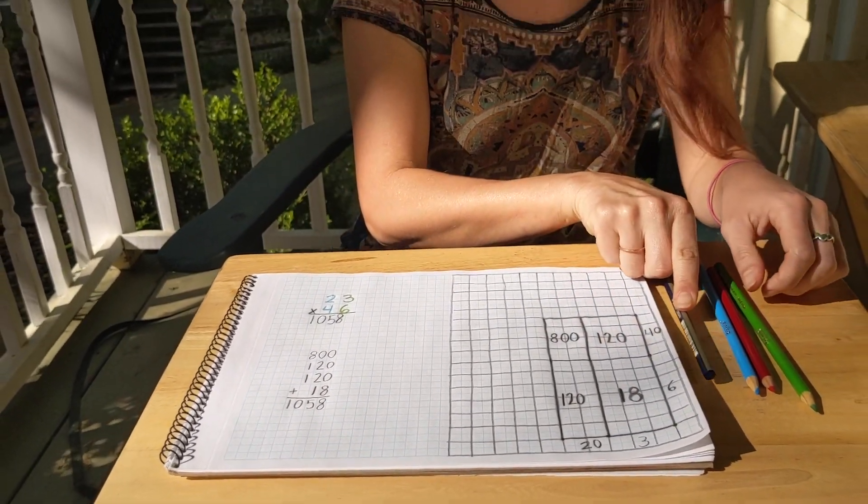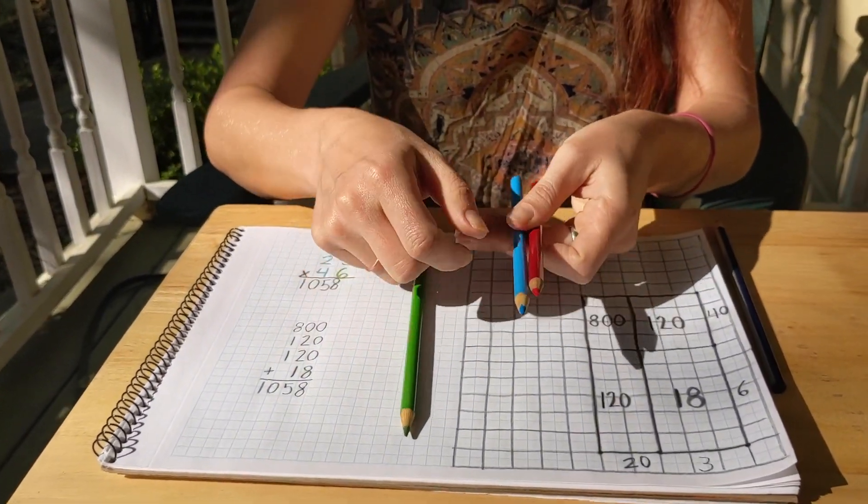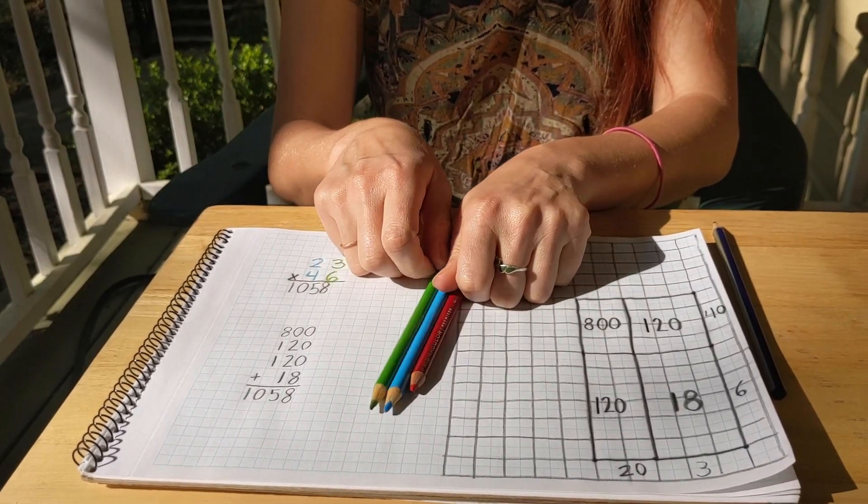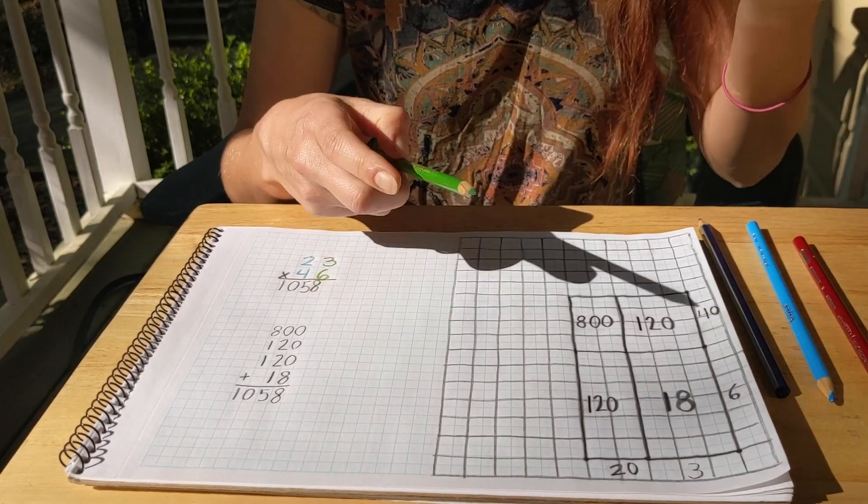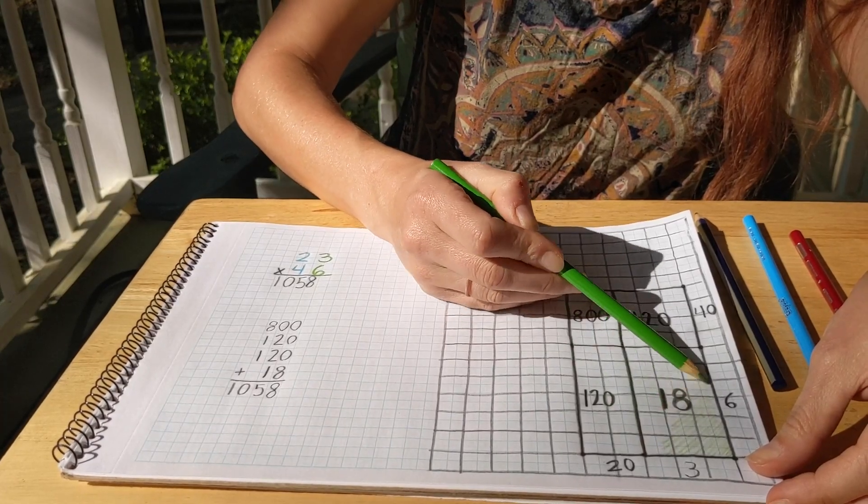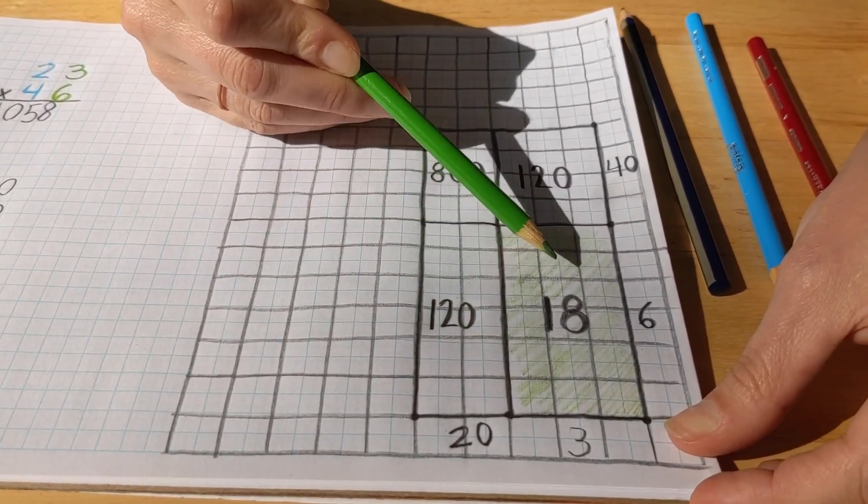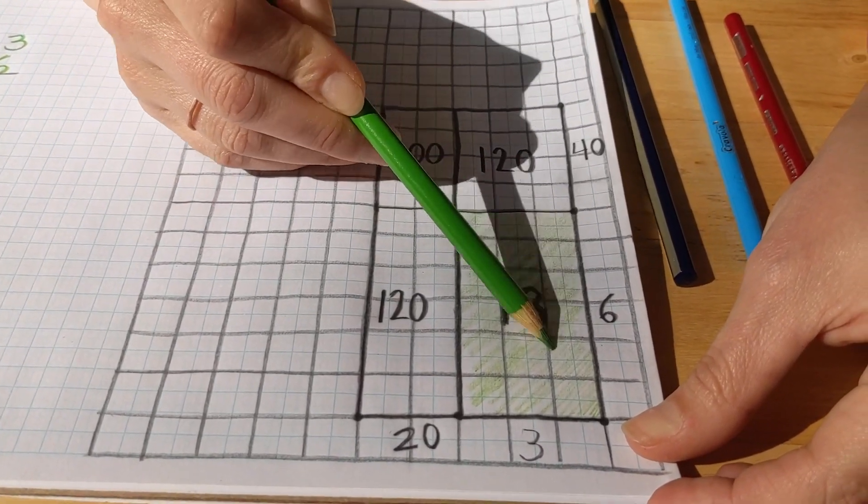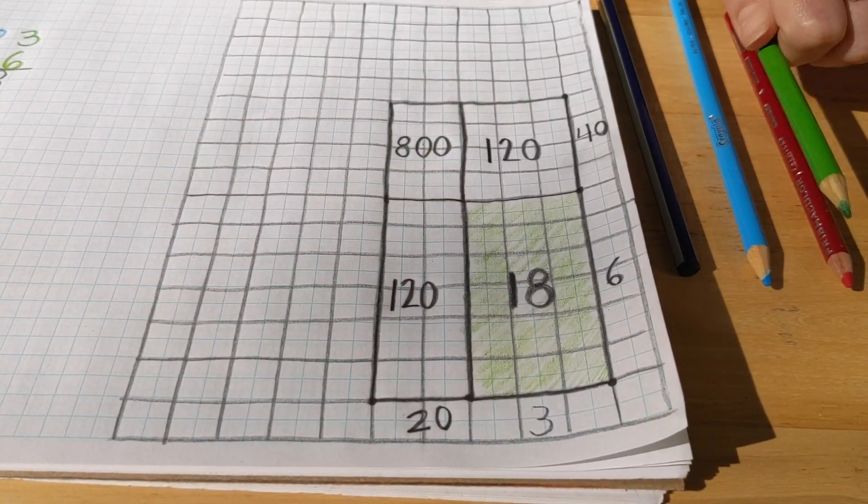And now we get to do the fun of coloring in our geometric multiplication. So here I have my colors for units, tens and hundreds. When we multiply units times units, we get units. So I'm going to lightly color in this whole rectangle with some green. And I don't want to color it so darkly that you can't see the number inside, right?